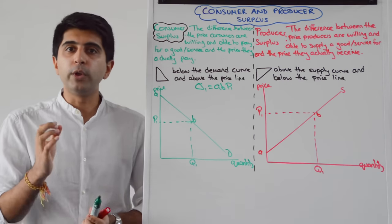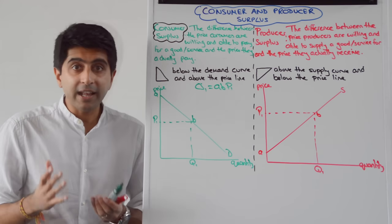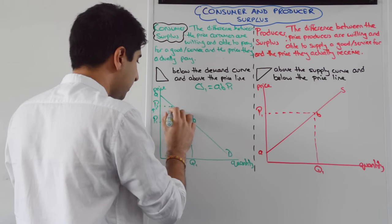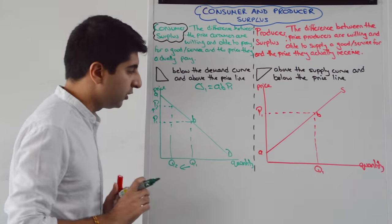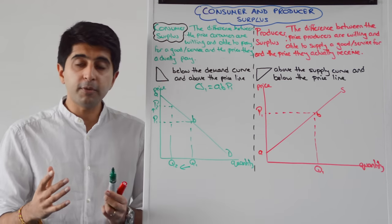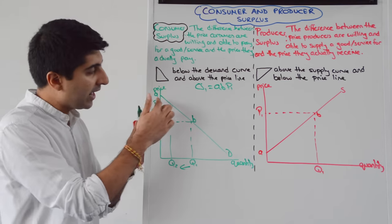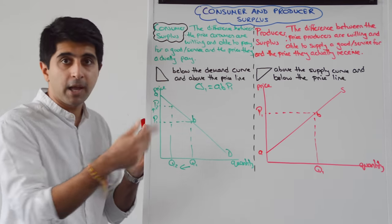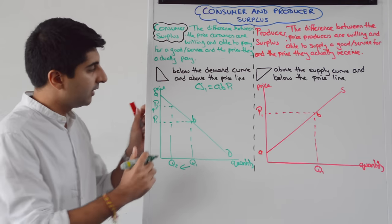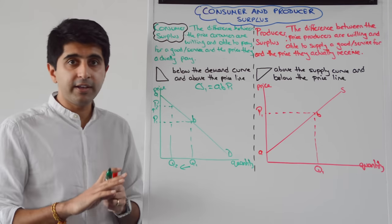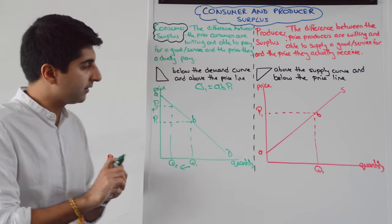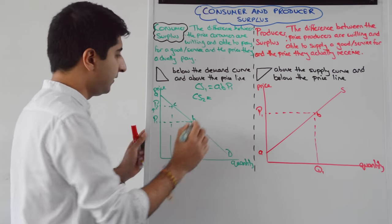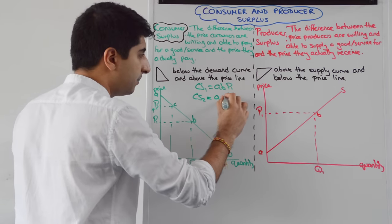Now if we change price, we can find out what's happened to consumer surplus. Let's raise the price from P1 to P2. The price has gone up and quantity has decreased from Q1 to Q2. Consumer surplus clearly falls because there are fewer consumers gaining surplus. Only consumers willing and able to pay above P2 gain surplus. So consumer surplus 2 is now the area A, C, P2.